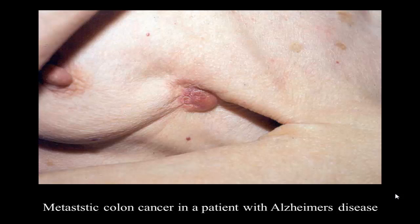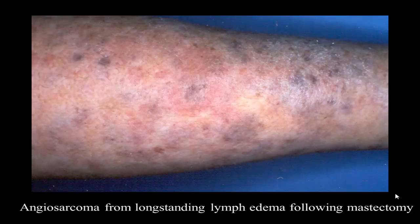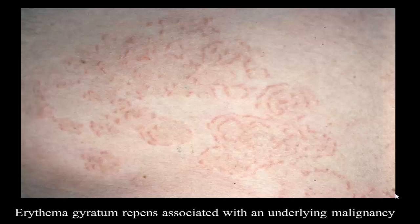One lady had advanced Alzheimer's disease and had been found to have guaiac-positive stools. Because of her advanced Alzheimer's, they decided not to work it up — probably a good decision — but then she presented with metastatic colon cancer on her skin. She had a big apple-core lesion in her transverse colon and died within six months. Another case was a lady who'd had a radical mastectomy for breast cancer and developed an angiosarcoma — Stewart-Treves syndrome — in her chronic lymphedematous limb. Also, erythema gyratum repens, which looks like tinea but is a paraneoplastic syndrome associated with upper aerodigestive squamous cell carcinoma.